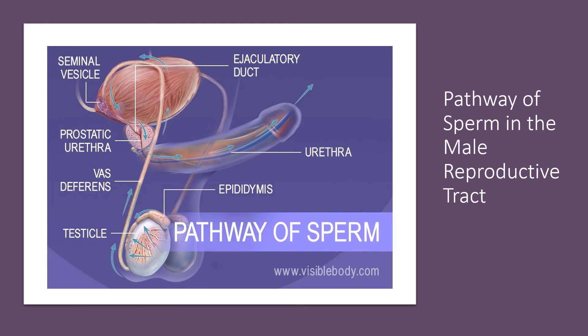Let's talk about the pathway of sperm in the male reproductive tract. Sperm are made in the seminiferous tubules of the testis. The sperm exit the testis, travel through the epididymis, travel up the vas deferens, join up with secretions from the seminal vesicle, traverse the prostate, travel through the urethra, and then exit the penis.